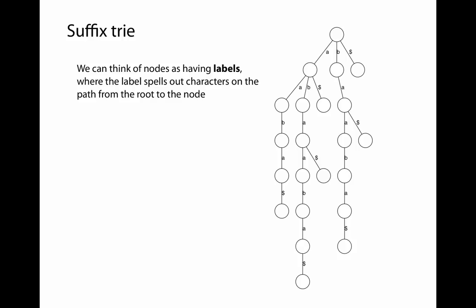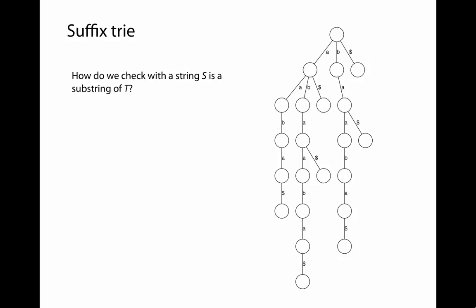Sometimes we think of the nodes of the suffix trie as having labels, where the label spells out the characters along the path from the root to that node. For example, a node might have the label 'baa' if those are the characters along the path from the root.